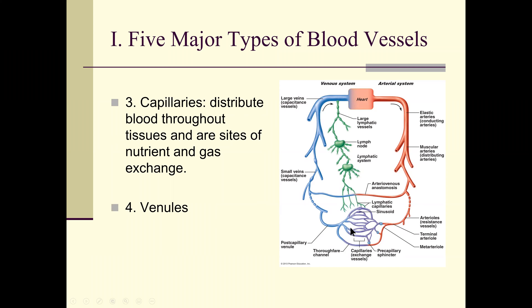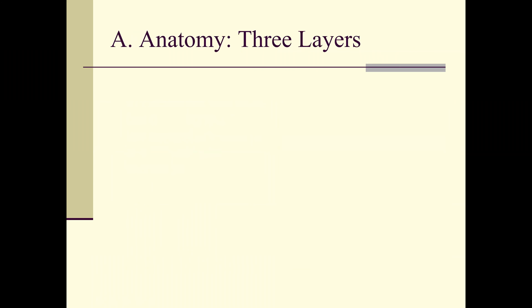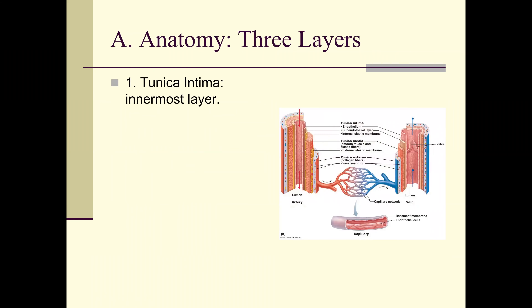Then we have venules and veins — veins carry blood back to the heart. Arteries have three layers. The tunica intima is the innermost layer in contact with the blood, lined with simple squamous epithelium, continuous with the endocardial layer of the heart. Ideally we want one smooth layer from the heart all the way back — no turbulence, no plaques, no narrowing, no thickening.